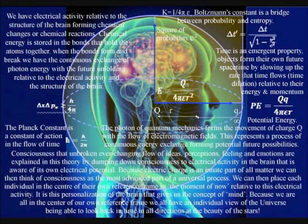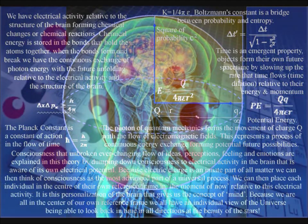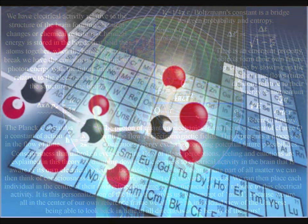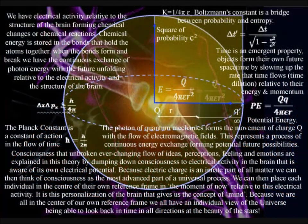We have electrical activity relative to the structure of the brain forming chemical changes or chemical reactions. Chemical energy is stored in the bonds that hold the atoms together. As the bonds form and break, we have the continuous exchange of photon energy.